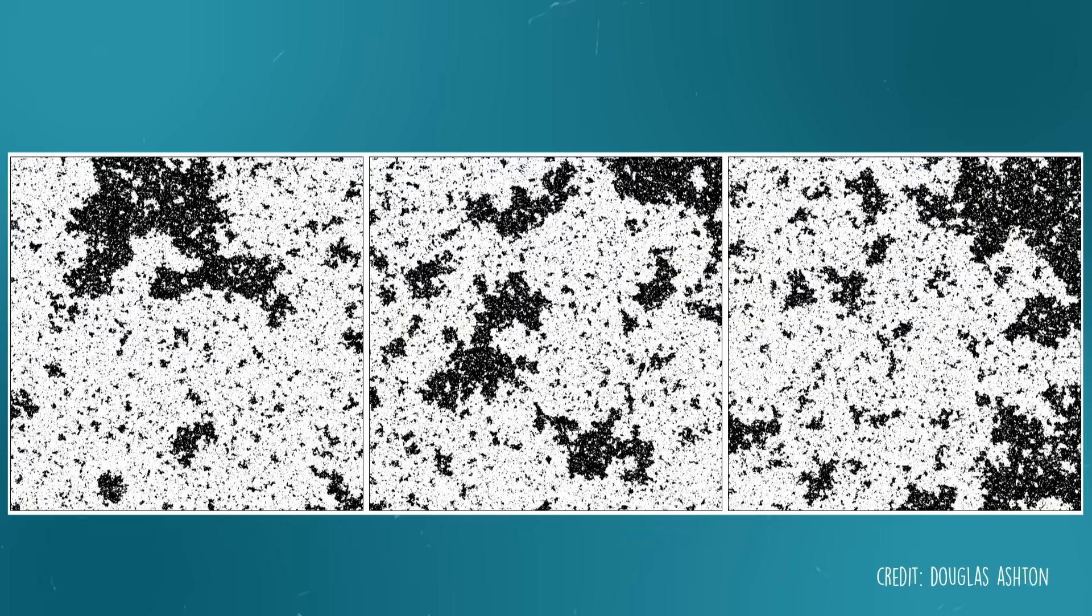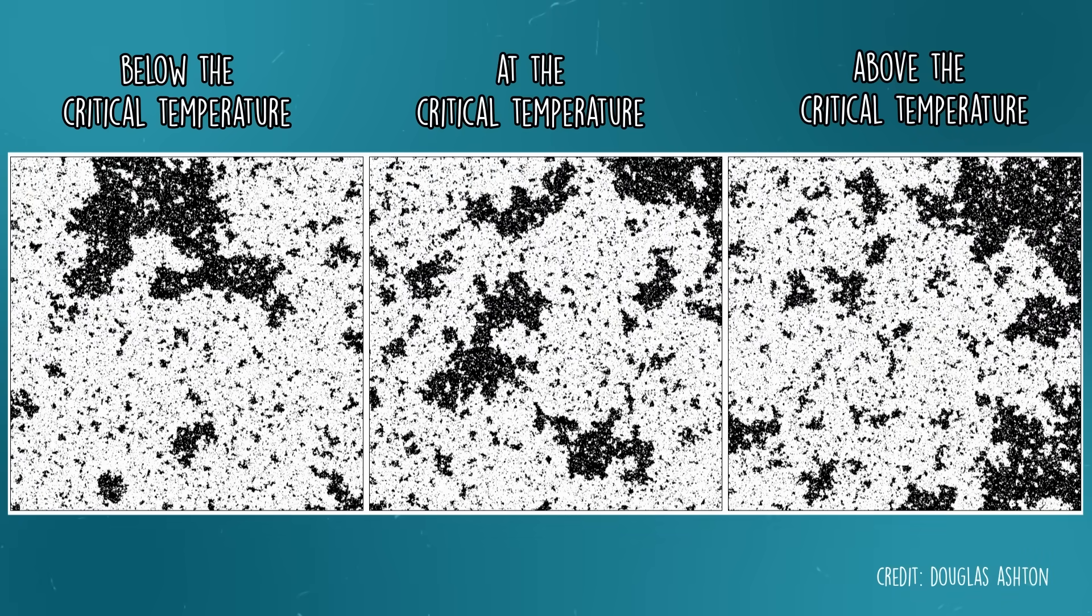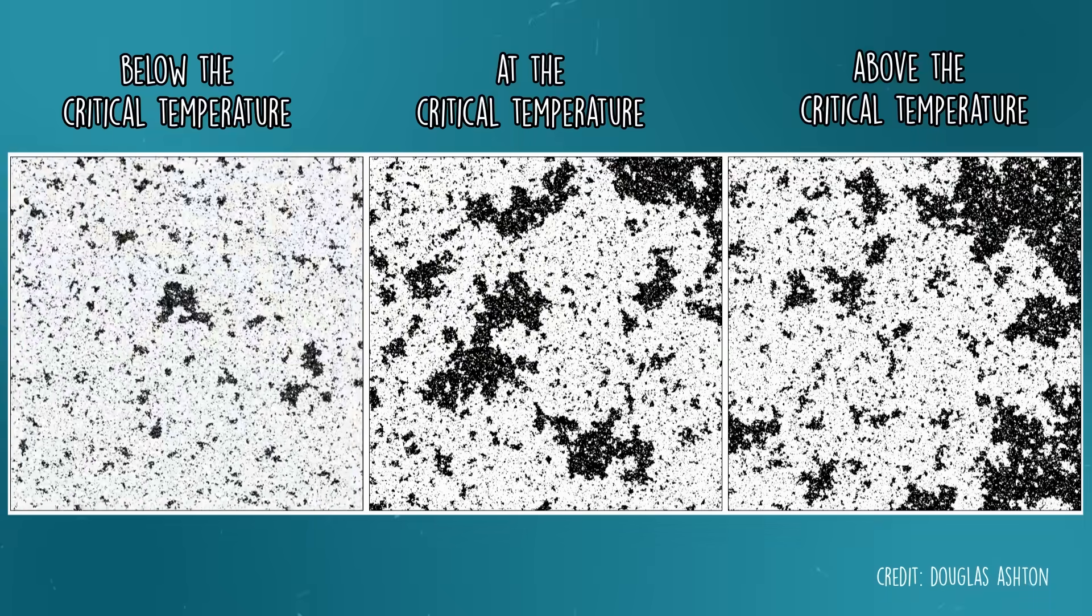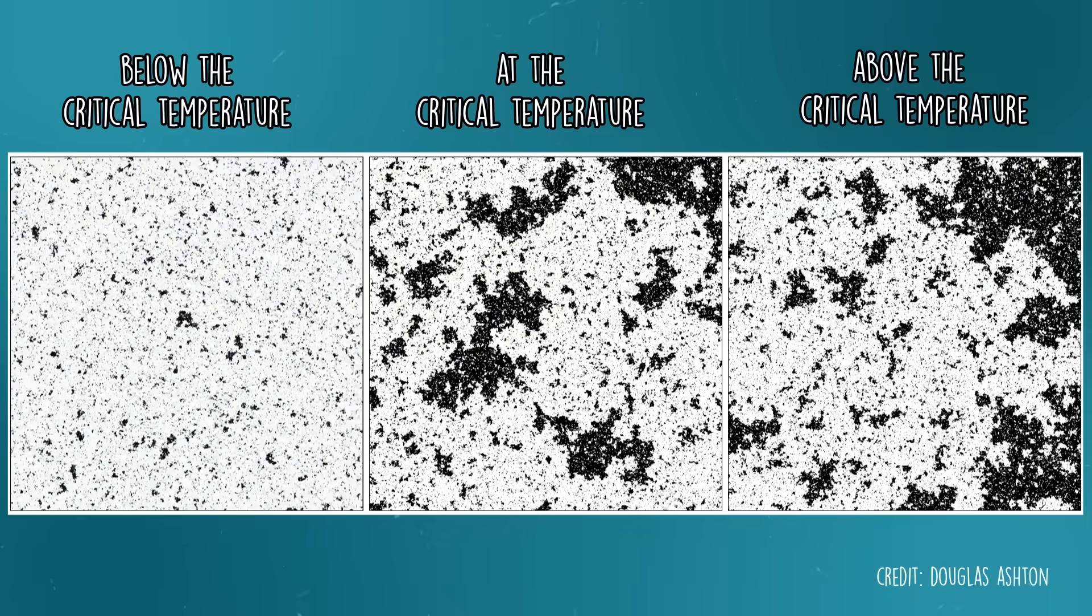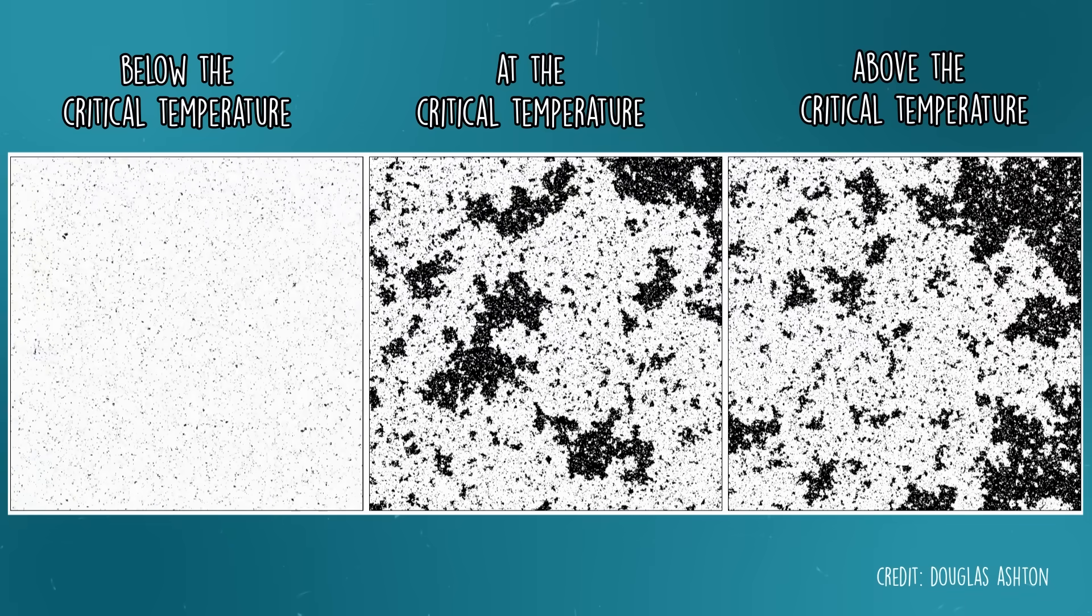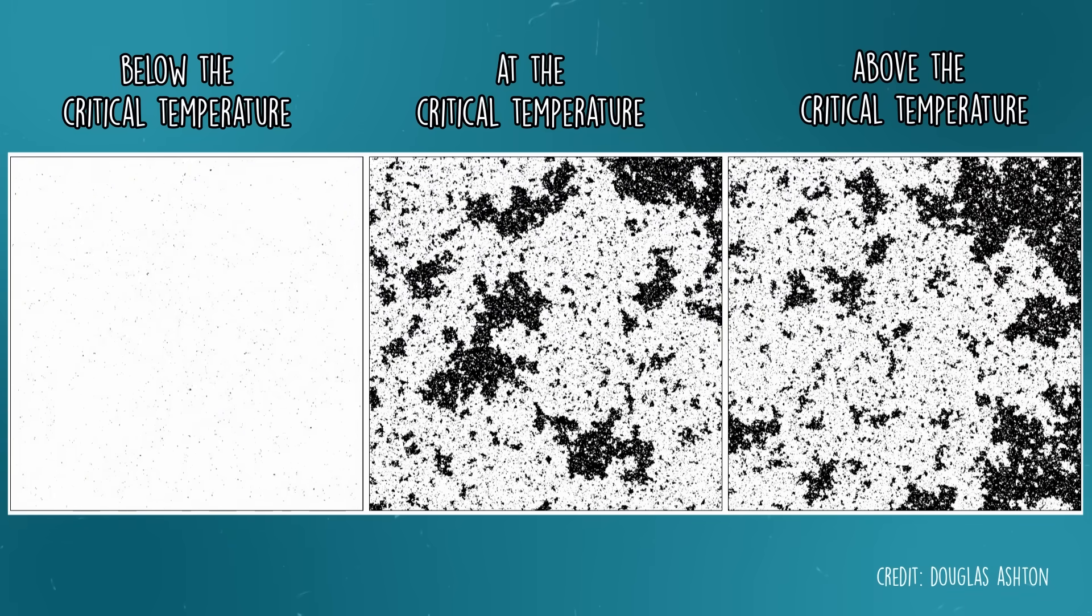Well, here's where the magic of phase transitions really shines. Here's a simulation of the Ising model at three different temperatures. I found these amazing simulations on the YouTube channel Douglas Ashton. Watch as we zoom out when we're below the critical temperature. We can see a pretty big difference between zoomed in and zoomed out. We end up with a uniform slab of dipoles. Exactly what we'd expect at low temperatures.